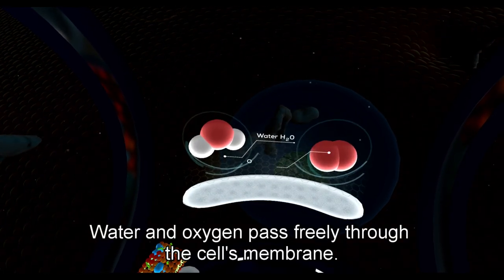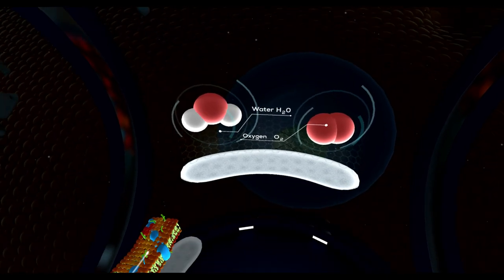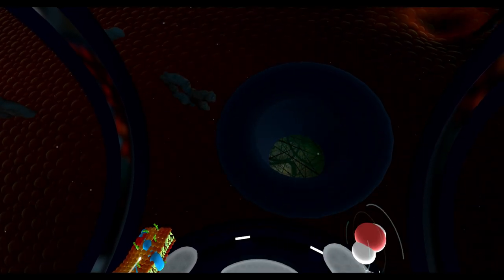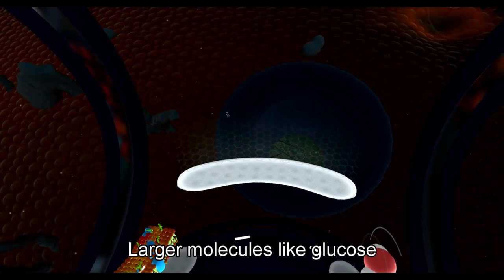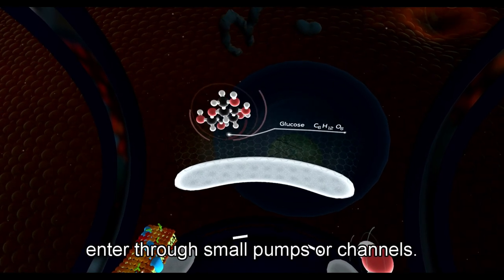Water and oxygen pass freely through the cell's membrane. Larger molecules, like glucose, enter through small pumps or channels.